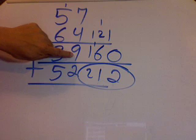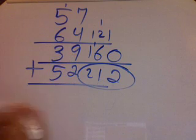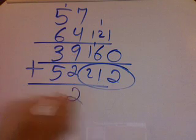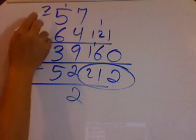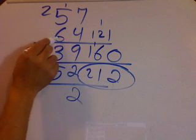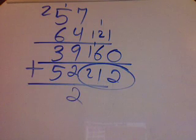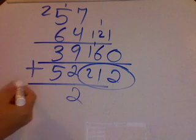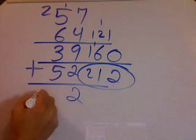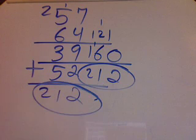Let's check a different method. 7 and 4 gives 11, plus the next gives 20, plus the next gives 22 — carry the 2. Then 2 and 5 is 7, plus 6 is 13, plus 3 is 16, plus 5 is 21. I get 212. Those are different ways to do addition.